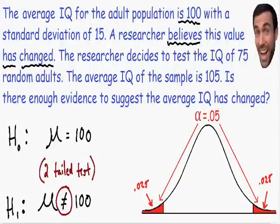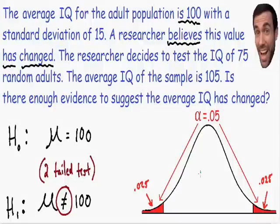One more thing to point out: we know the total area under the curve is equal to 1, or 100%. So if the area of the tails equals 0.05, then the middle of the curve has an area of 95%, or 0.95. Now that we've stated our level of significance, let's move on to step number three.